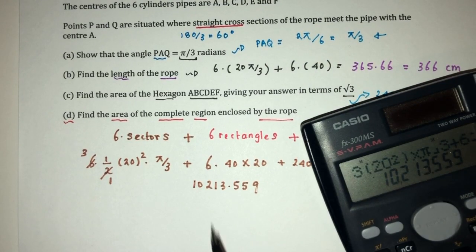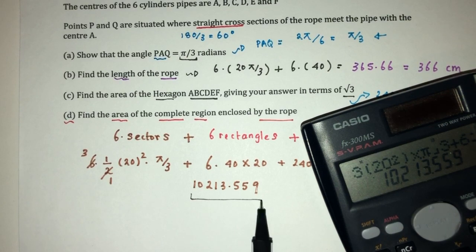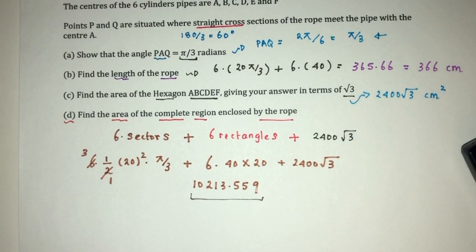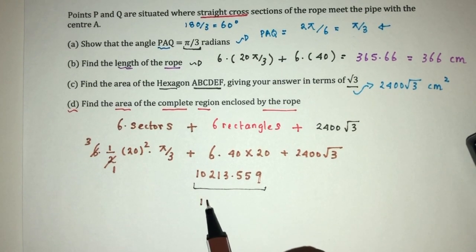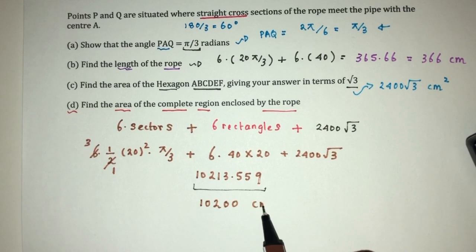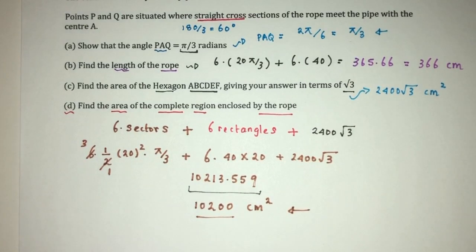So, as you can see, here we have this answer. Now, again, it is not exact, what do we do? We can rewrite this down, correct to 3SF. That will be 10,200. And that will be centimeters squared for the area. And this is the answer for the last question.